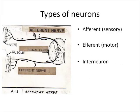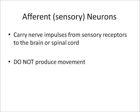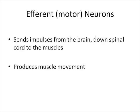There are three types of neurons: afferent, which is sensory; efferent, which is motor; and interneuron. There is a schematic showing afferent and efferent neurons. Afferent neurons carry nerve impulses from sensory receptors to the brain or spinal cord — they do not produce movement. Efferent or motor neurons send impulses from the brain down the spinal cord to the muscles and do produce movement.